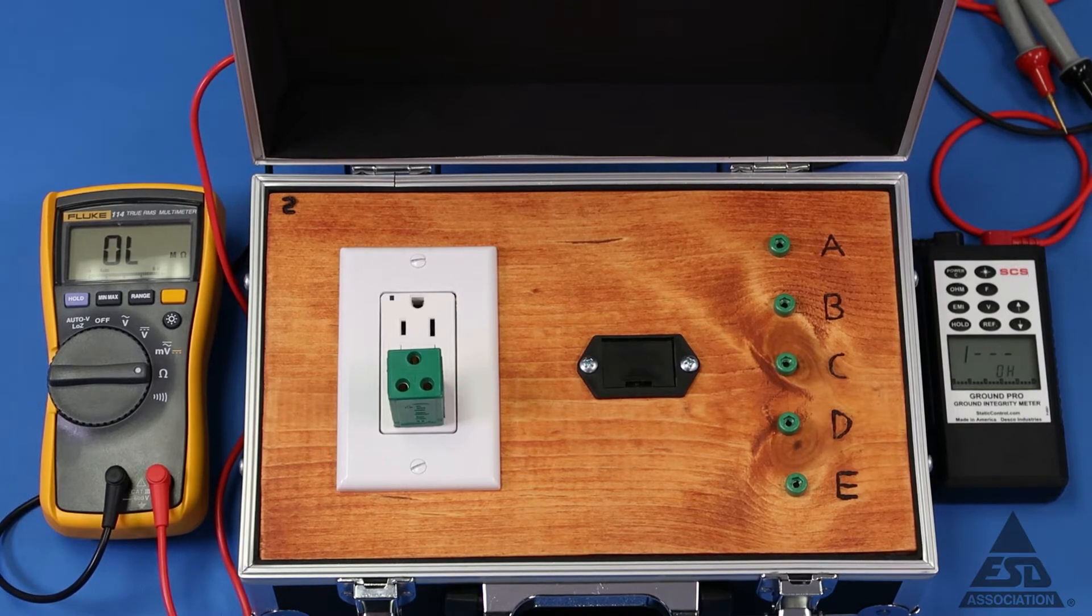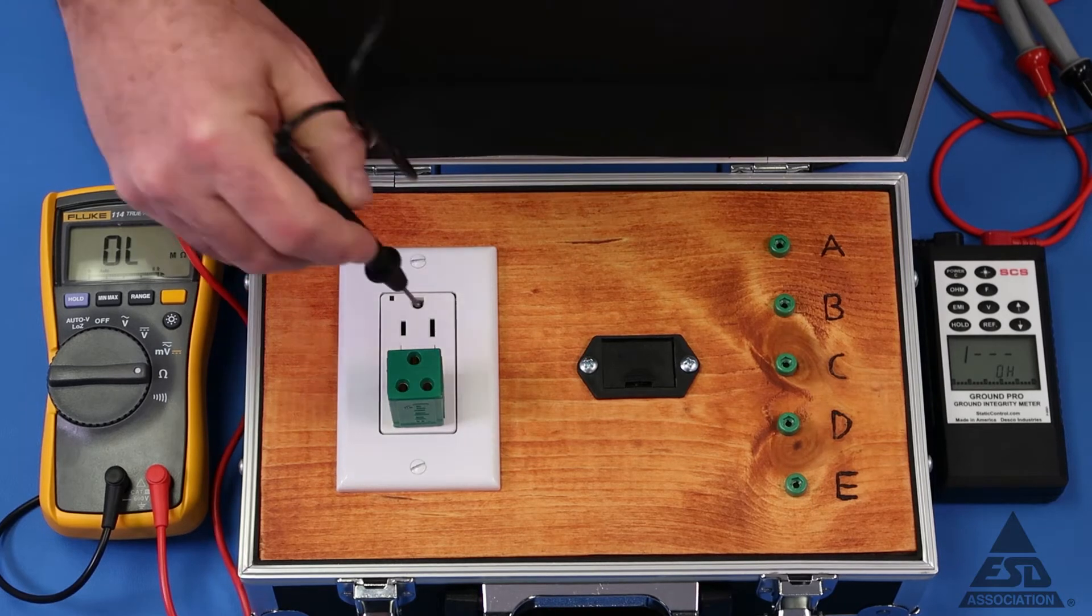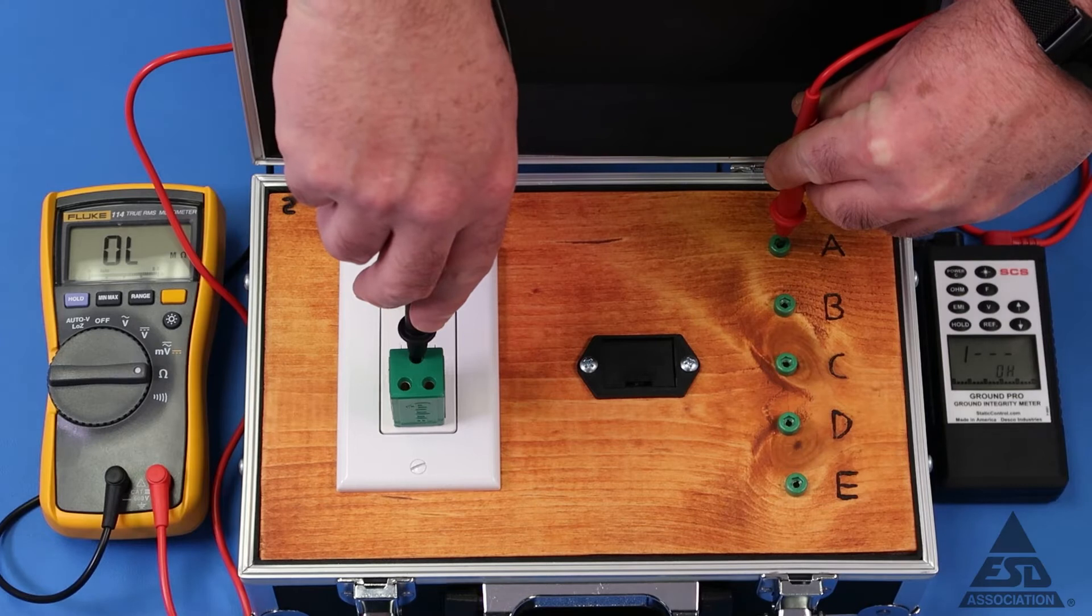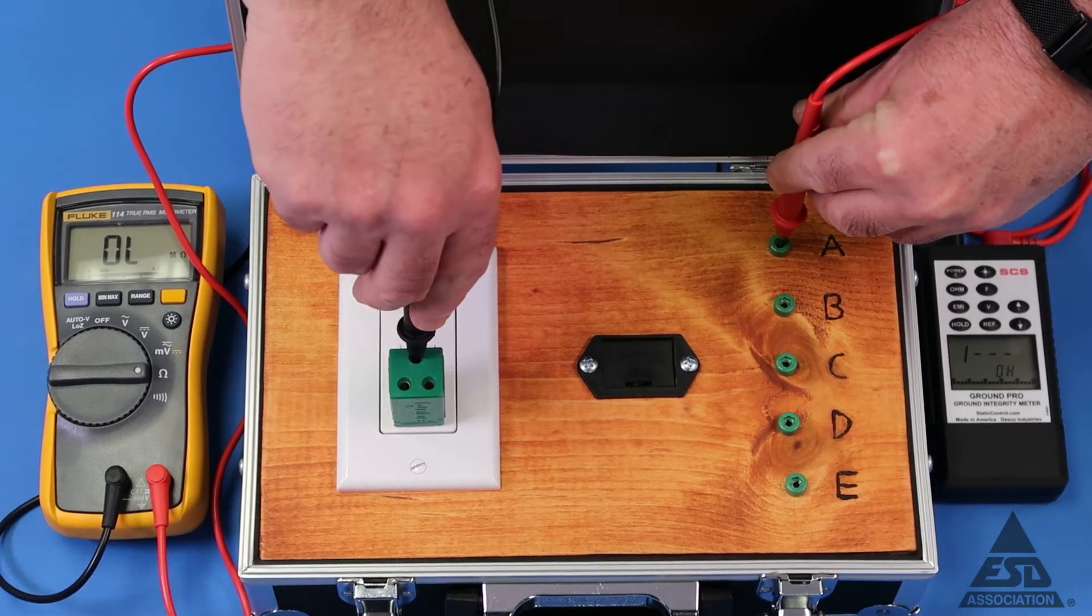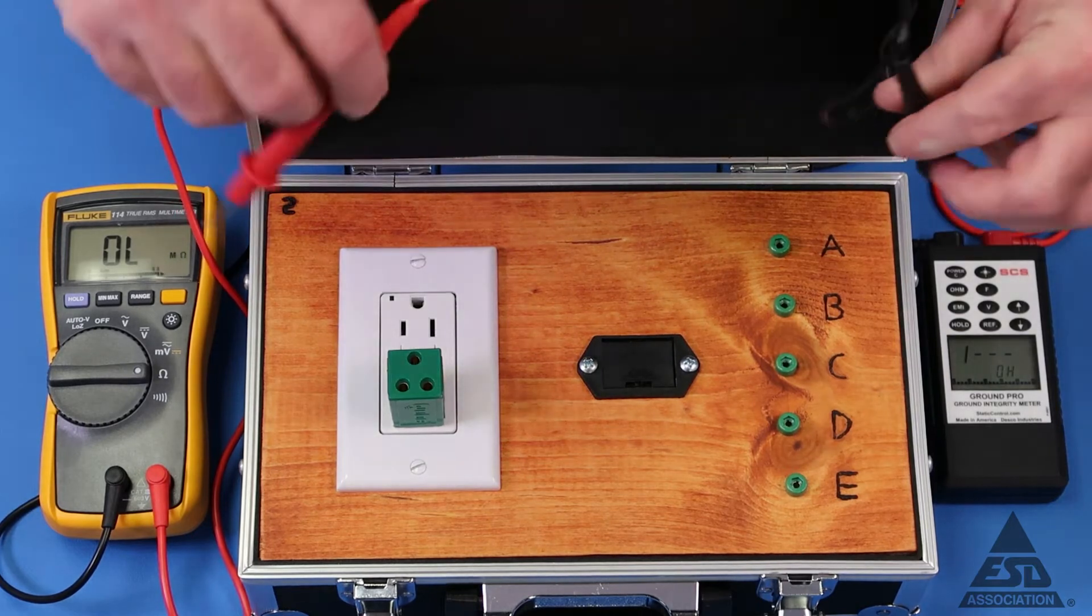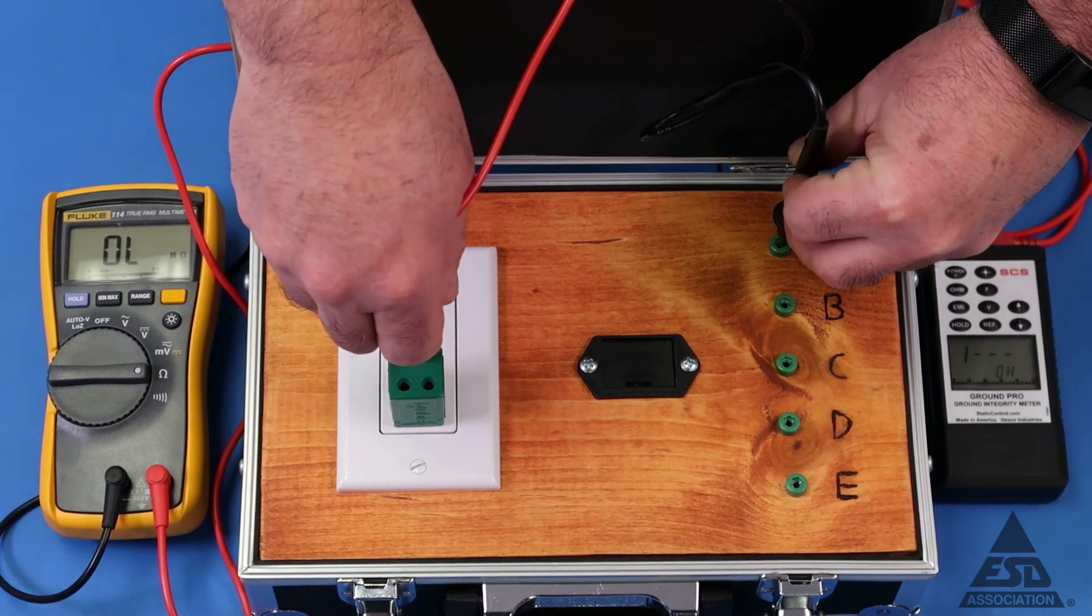The first measurement to ground to A, and it's overload, so that means it's higher than the meter can read. And then reverse it real quick, and it doesn't change.